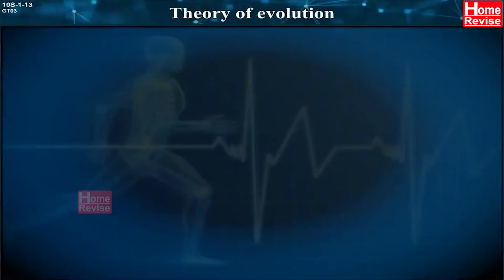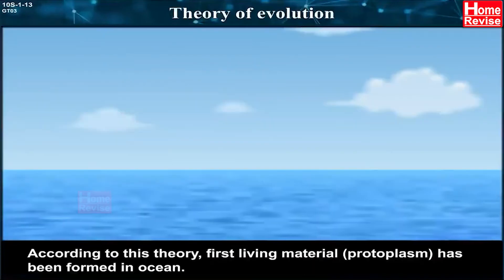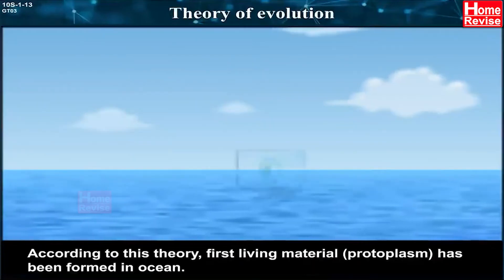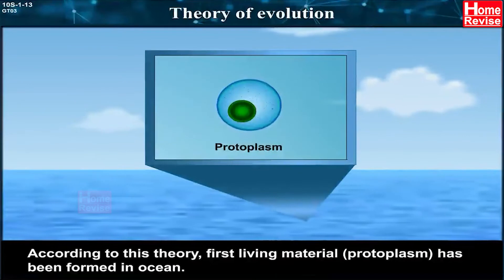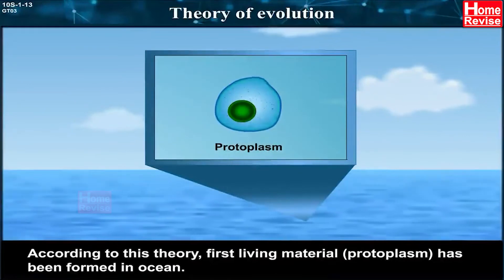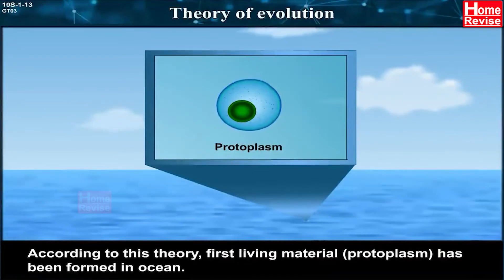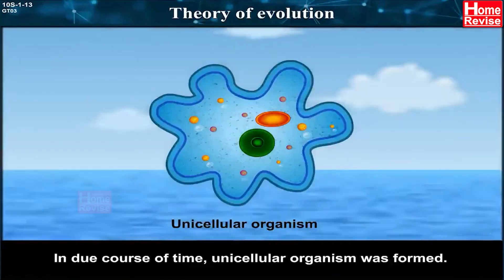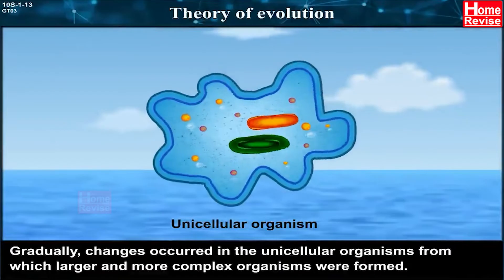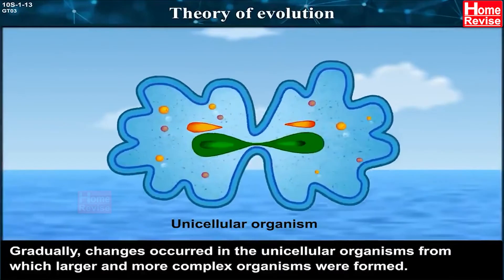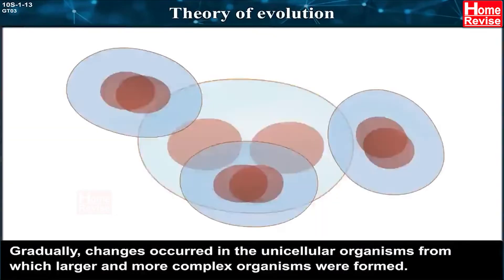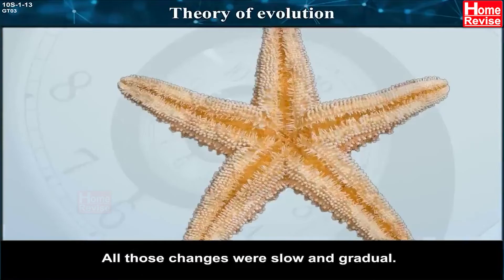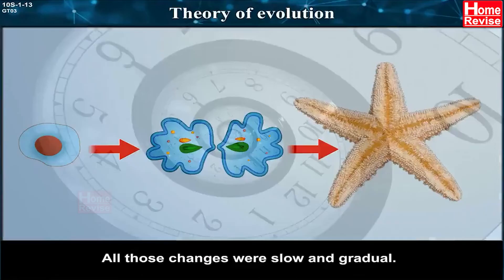Theory of Evolution. According to this theory, the first living material, i.e., protoplasm, was formed in the ocean. In due course of time, unicellular organisms were formed. Gradually, changes occurred in the unicellular organisms from which larger and more complex organisms were formed. All those changes were slow and gradual.